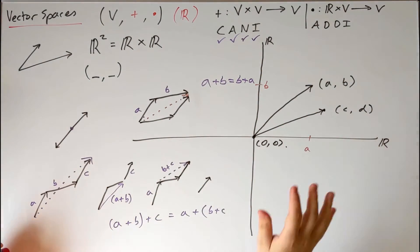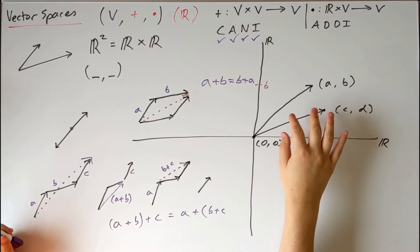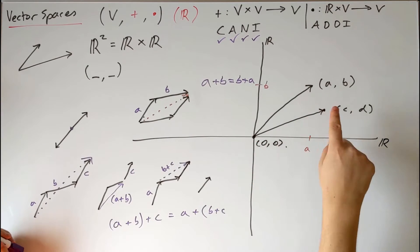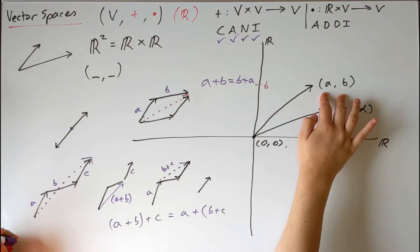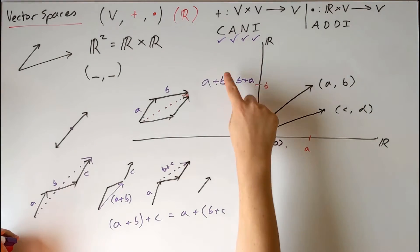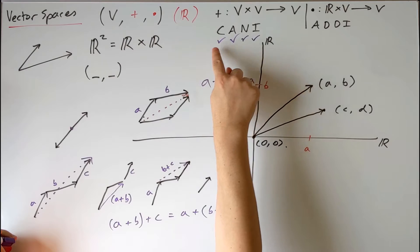So we've shown that this kind of reasonably concrete example of line segments drawn from the origin, or we can think about them as these pairs of numbers, we've shown that they add in the appropriate way such that they form a vector space.